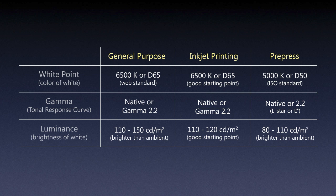For pre-press luminance, the ISO standard recommends somewhere from 80 to 110 cd/m², depending on how low your monitor can go, since this is still a working environment and the screen should be brighter than ambient. We'll also be soft proofing our images, so a lot of these settings will be adjusted based on soft proofing options. Since we haven't talked about that yet, I'm giving these as starting recommendations, and we'll revisit them when we get to soft proofing.